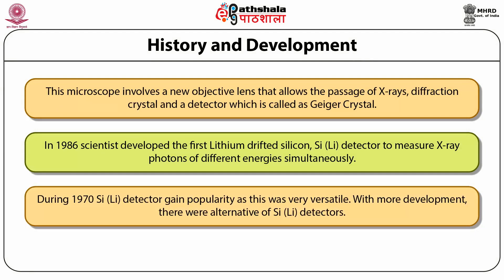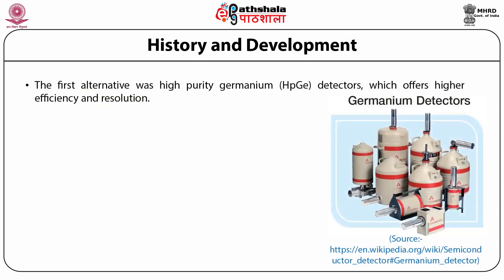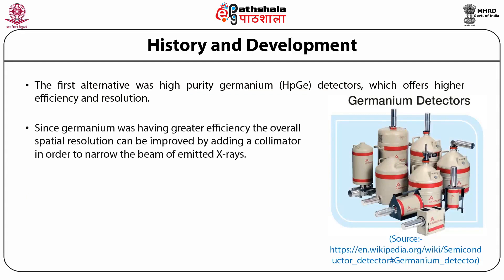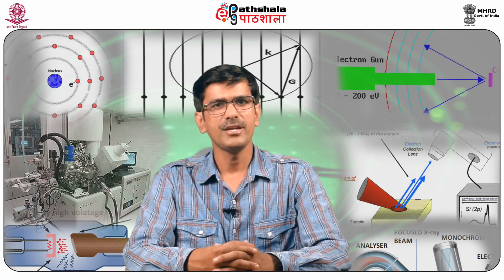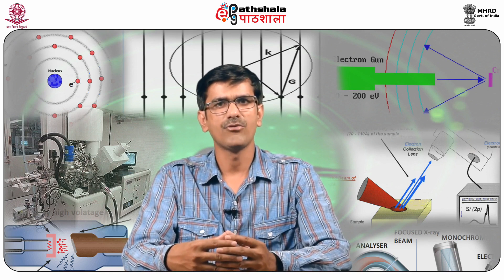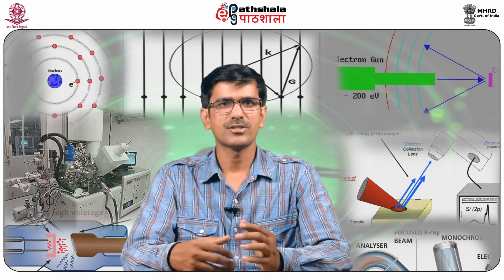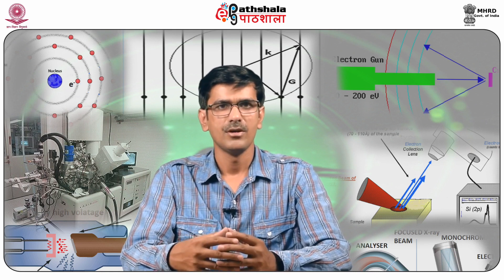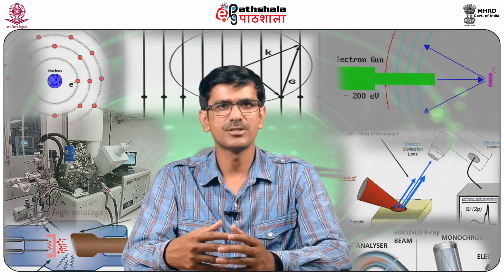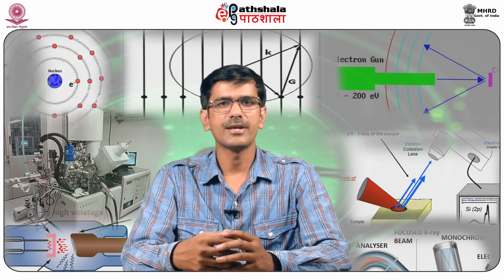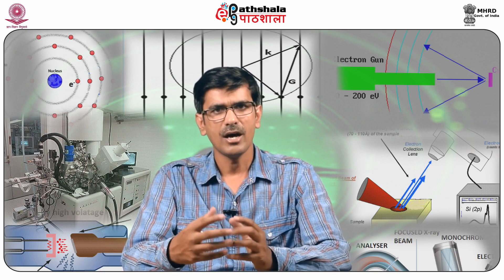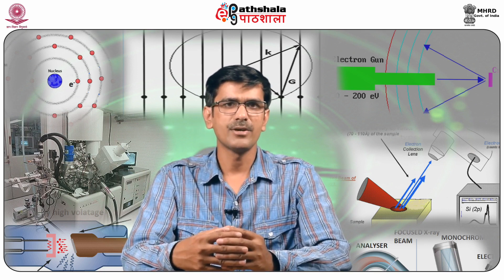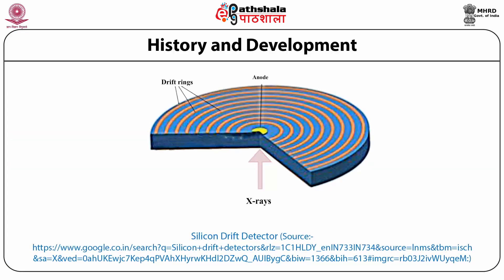With more development, alternatives to silicon lithium detectors emerged. The first alternative was the high-purity germanium detector, which offers higher efficiency and better resolution. Since germanium had greater efficiency, the overall spatial resolution could be improved by adding a collimator to narrow the beam of emitted x-rays. Then, in 1983, silicon detectors came back again and were called silicon drift detectors. A group of scientists developed a system that operates at room temperature with efficient cooling, helping in complex applications like identifying inclusions in ultra-pure material or specifying the complex chemical composition of aggregate particles.